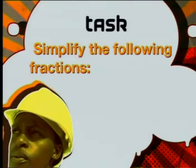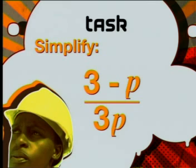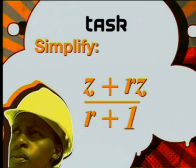Well, that's all for this lesson. In this lesson, we looked at the simplification of fractions once again, and we saw how to simplify fractions by cancelling our common factors. Now it's time for you to do some on your own. Simplify the following fractions: 3 minus p divided by 3p, and z plus rz divided by r plus 1. I hope you've enjoyed learning how to simplify fractions. Remember, you can only cancel factors. And in order to cancel factors, you first need to factorize the numerator and the denominator of your fraction.